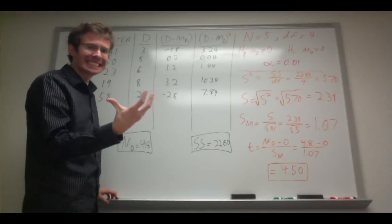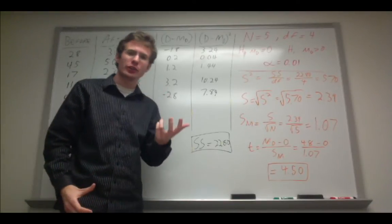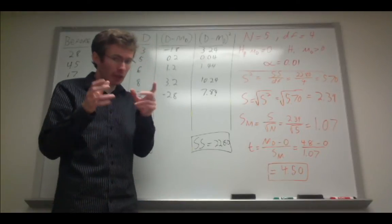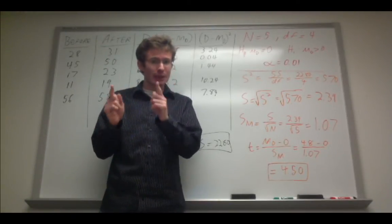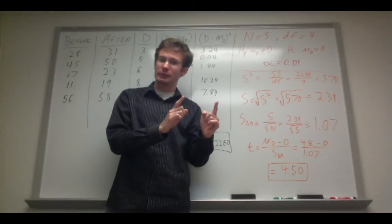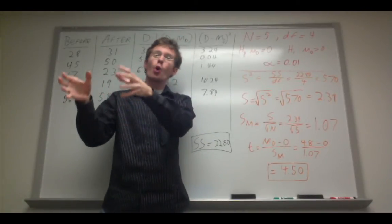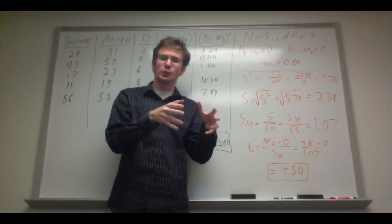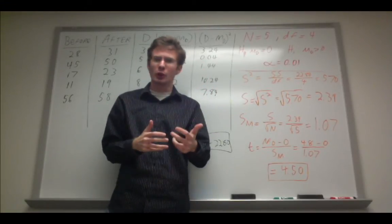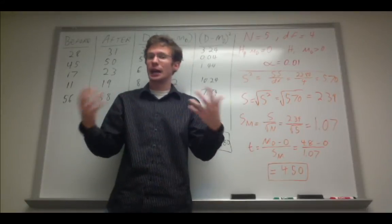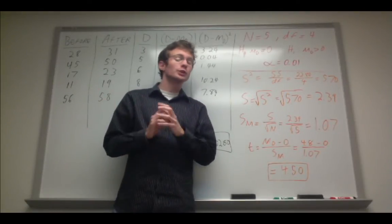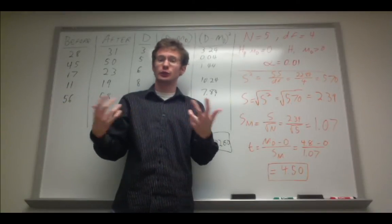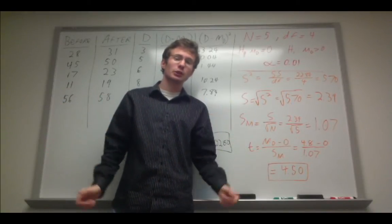Another flavor of t-test is called repeated measures or within subjects t-test. That's where we still have one sample, but we're measuring the same people from point A to point B. So we have them at one time point, we introduce some manipulation, and then we measure them after we've introduced that experimental manipulation. It could be a drug, it could be an exercise or a therapy, anything. We just want to know if there's a difference from one time point to another as a result of some treatment or experimental manipulation.